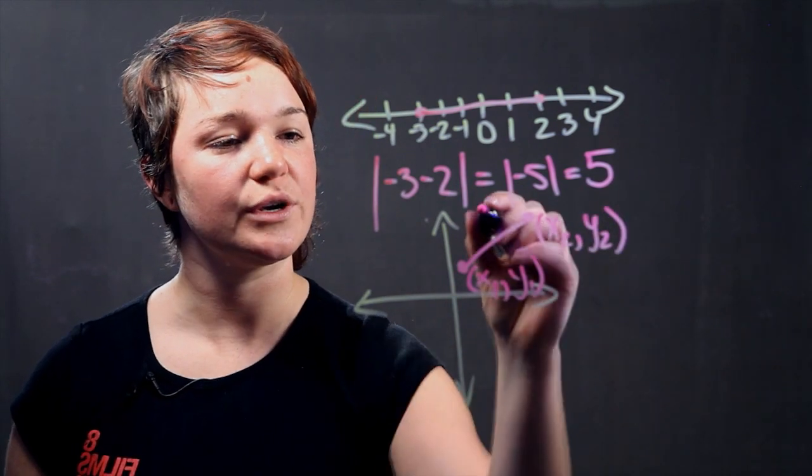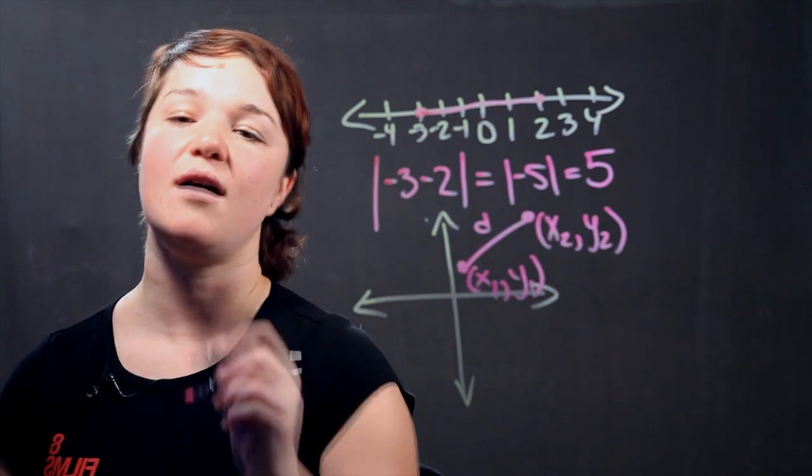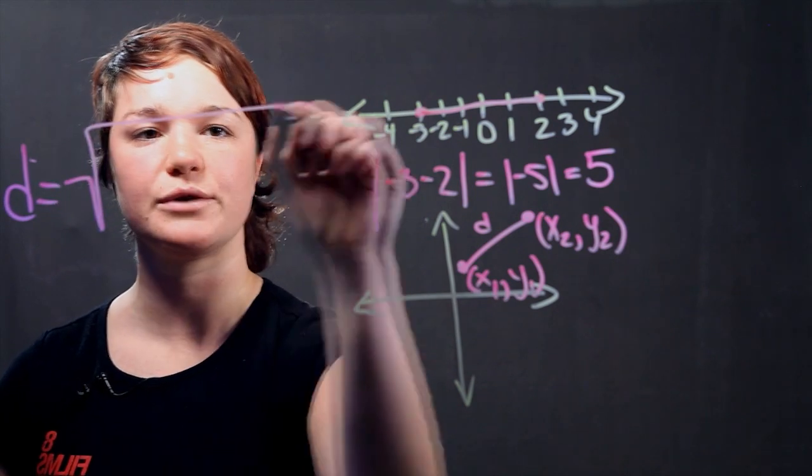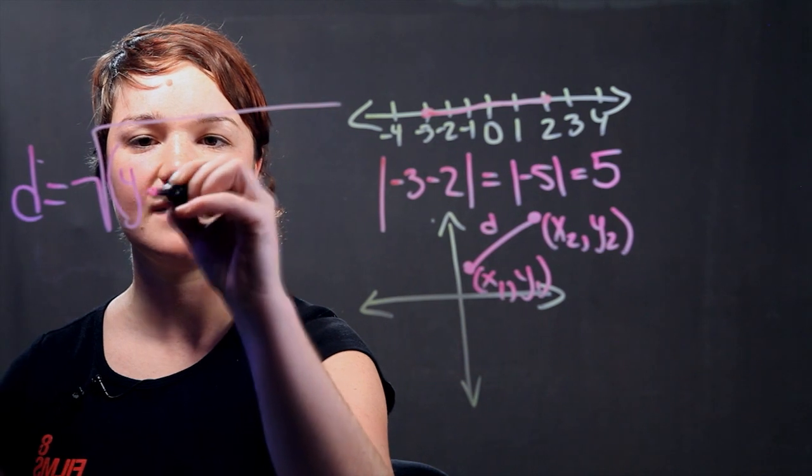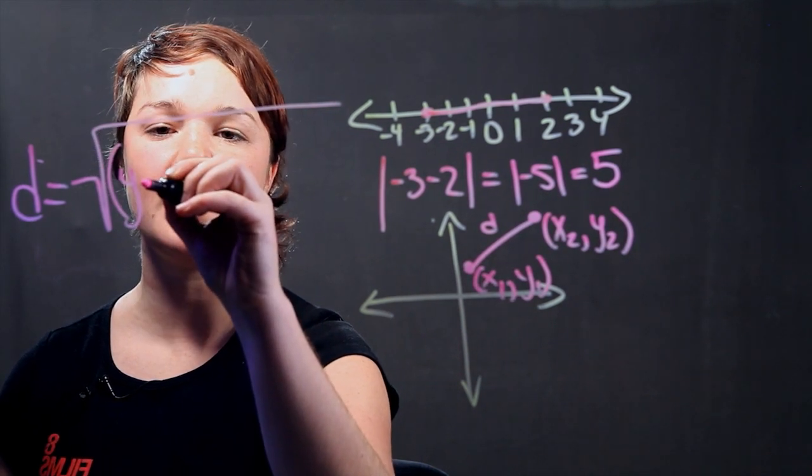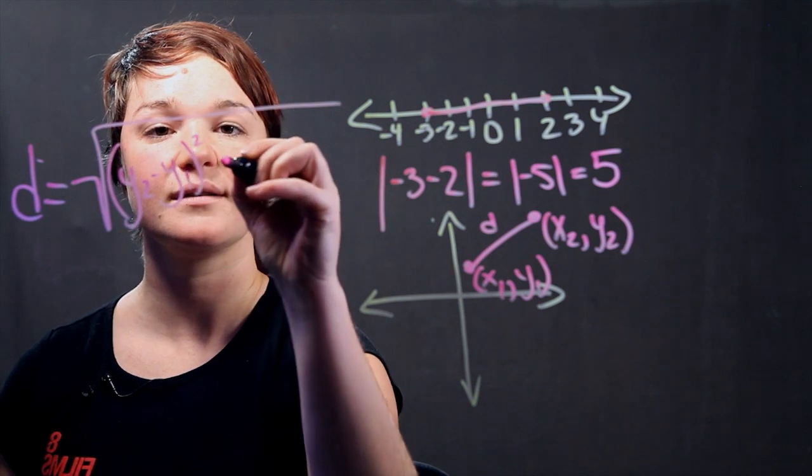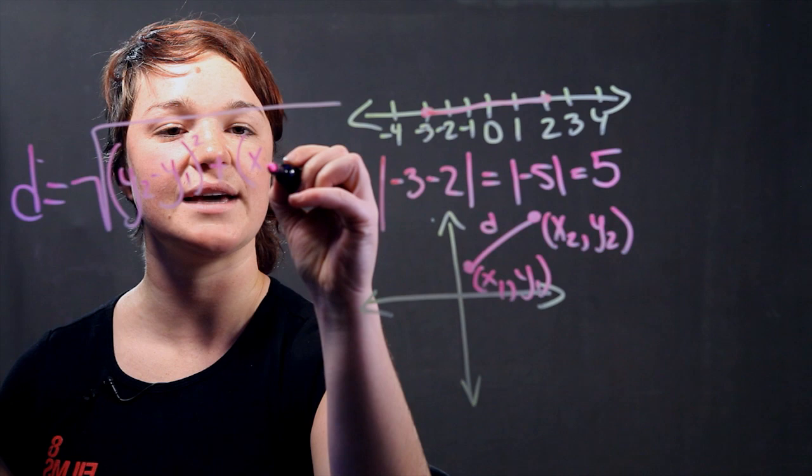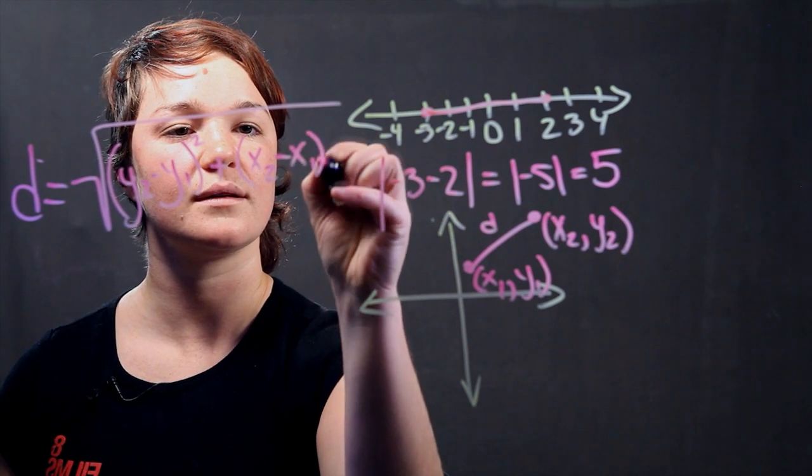And we're going to call the length of the segment D. So in order to figure out D, all we have to do is take the square root of the difference of the points squared. So it would be Y2 minus Y1 squared plus the difference between the X coordinates, X2 minus X1 squared.